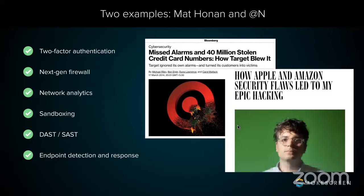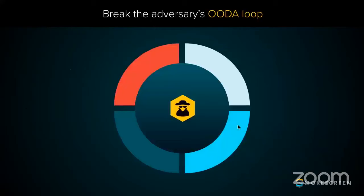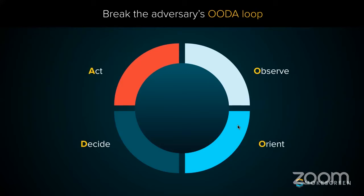To understand why this is successful, it's important to understand the OODA loop. It was created by a World War II fighter pilot for aerial combat, but it applies to pretty much any adversarial face-off — cyberspace, aerial combat, even business negotiations. Whoever completes this loop first gets their way. OODA stands for Observe, Orient, Decide, and Act — whoever completes this loop first defeats their opponent.